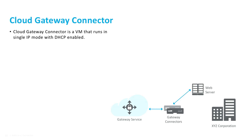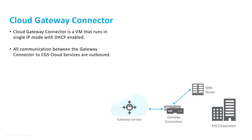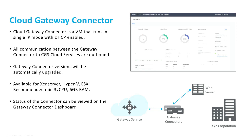One important thing is you need what is called a gateway connector — think of this as a fully managed appliance that you can download and deploy within your data center. A common best practice is to use this gateway connector in HA mode so that you have full resiliency and redundancy for connections. It's actually a virtual machine that runs in single IP mode with DHCP. All communication from the connector out to the cloud is fully encrypted in a TLS channel, and we only make outbound connections. These connectors are fully managed by Citrix, automatically upgraded, and you can monitor their health with a simple dashboard.